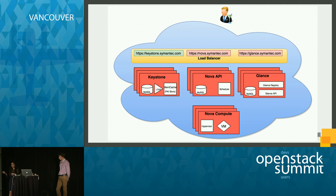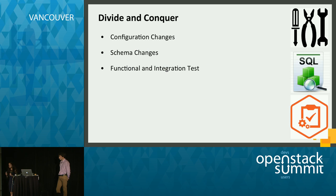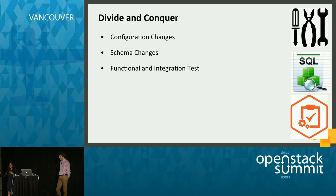In this upgrade plan, we upgraded most of the core OpenStack services: Keystone, Nova, Glance, and Horizon — which is not listed here but was upgraded as well. For each of the OpenStack services, we went through and looked at what are the configuration changes and what are the deprecated options. We want to make sure we don't use those deprecated options anymore, and we identify what the new options are in the configuration file.